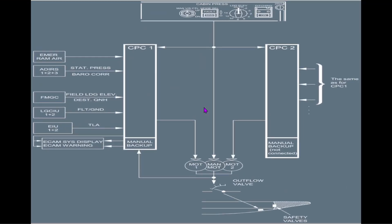In der Mitte der Architektur sehen wir die beiden Cabin Pressure Controller 1 und 2. Wir haben immer ein aktives und ein passives Backup-System. Fällt ein System aus, übernimmt automatisch das andere – ohne dass wir eingreifen müssen. Das passiert alles im Hintergrund, wir würden es kaum mitbekommen. Jeder Controller hat seinen eigenen Motor am Outflow Valve: CPC 1 hat Motor 1, CPC 2 hat Motor 2.